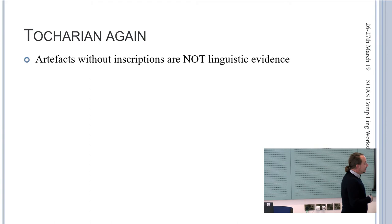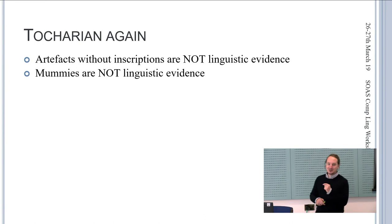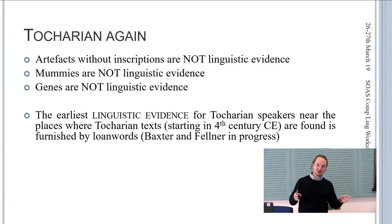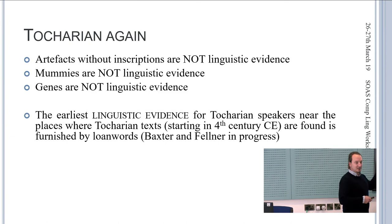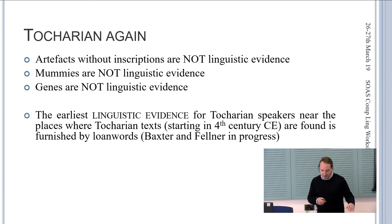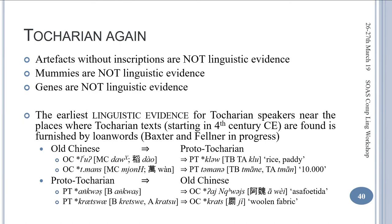A little preaching: Tocharian subgrouping is very often reinforced by arguments that are not linguistic. Artifacts without inscriptions are not linguistic evidence. Mummies are not linguistic evidence. Genes are not linguistic evidence. The earliest linguistic evidence for Tocharian speakers near Xinjiang — where the texts were found and where they are attested over a period of 600 years between around 400 and 1000 CE — are furnished by loanwords. This is ongoing work with Bill Baxter; here are some good loanwords. Stay tuned.